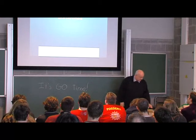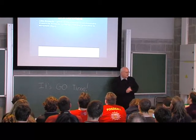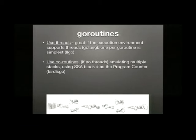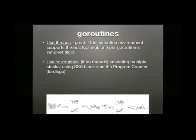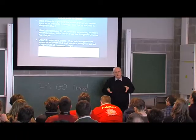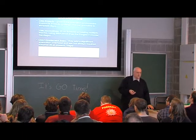On the question of goroutines: if you've got threads, you can use threads — the simplest thing is one thread per goroutine in terms of generating code. If you haven't got threads, as TardisGo doesn't, you have to use coroutines and keep a pseudo-stack for each of your coroutines. I actually use the SSA block number as a program counter — that's my top tip. But there's a strong argument for not having goroutines at all in some circumstances. If you're making a callable library, I think there's a very good case for not having goroutines, because it's going to make things much faster.